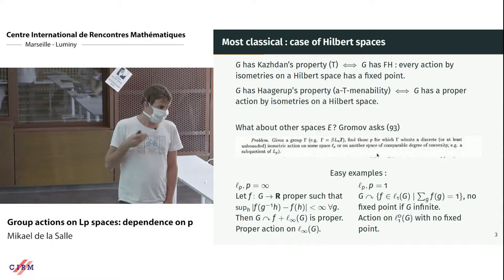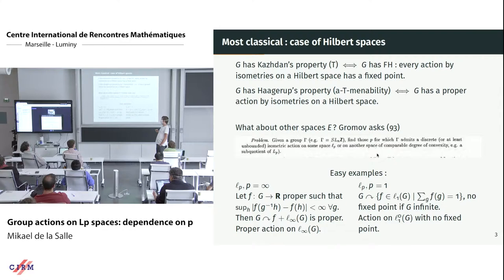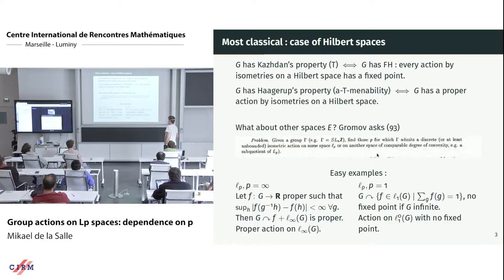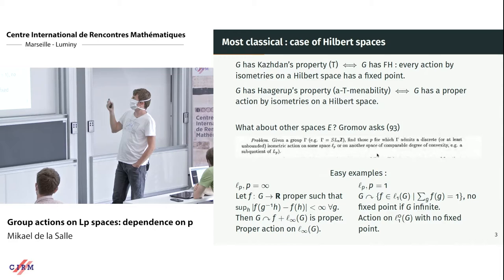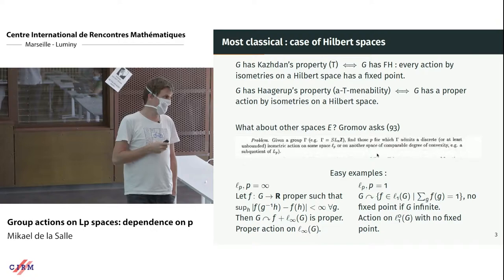There are reasons to go beyond Hilbert spaces. Gromov asked, in his celebrated paper on asymptotic invariants of groups, whether given a group one can understand when it admits a proper and unbounded isometric action on some LP space, or another space of comparable degree of convexity.